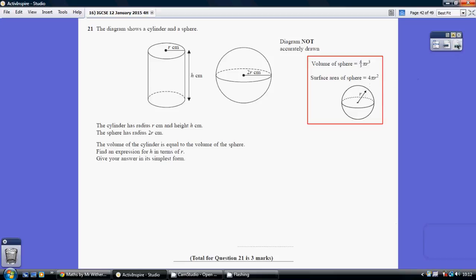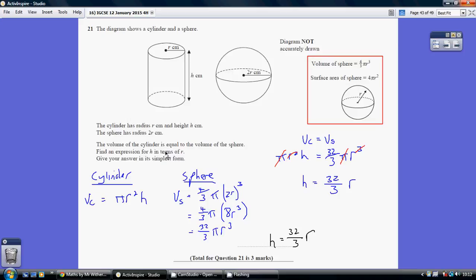Question 21. Now the key thing here is that we're told that the volume of the cylinder is equal to the volume of the sphere. So let's just go and work out the volumes of both in terms of R and H and then just make them equal. So starting off with the cylinder.